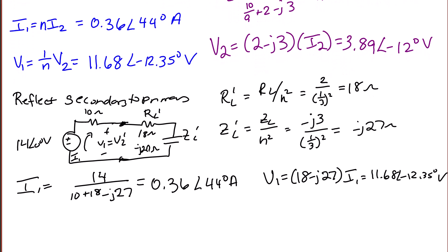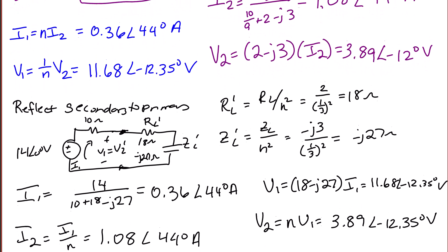V2 is equal to NV1 positive equation, which is 3.89 with an angle of negative 12.35 degrees, exactly what we got before. And finally, I2 is equal to I1 over N, which equals 1.08 with an angle of 44 degrees, which is exactly what we got before.